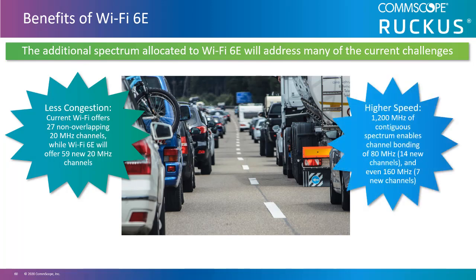Higher speed: 1,200 MHz of contiguous spectrum enables channel bonding of 80 MHz — 14 new channels to be exact — and even 160 MHz, which is 7 new channels. This is good news for high-density venues like convention centers and auditoriums. In the home, Wi-Fi 6E will deliver speeds that complement the multi-gig speeds of the latest fiber offerings.